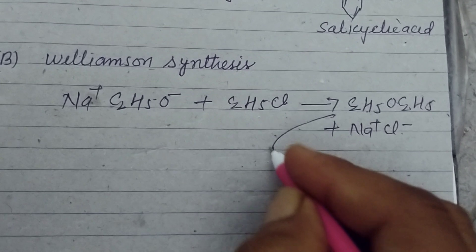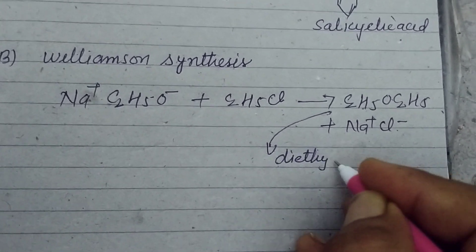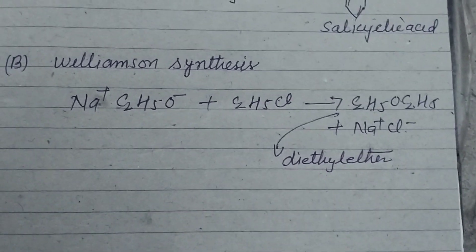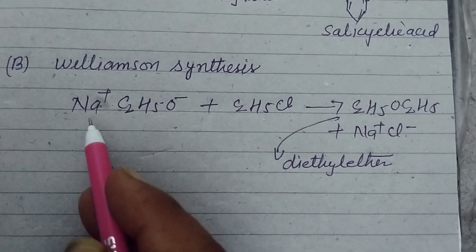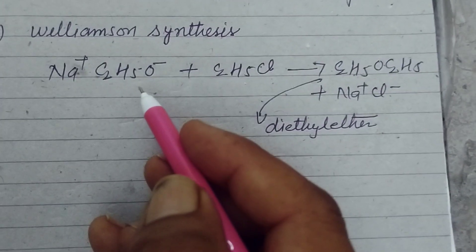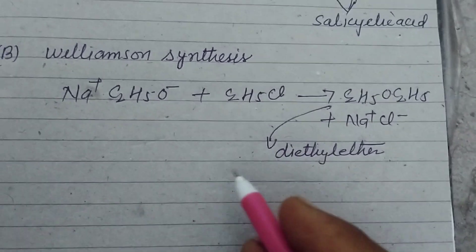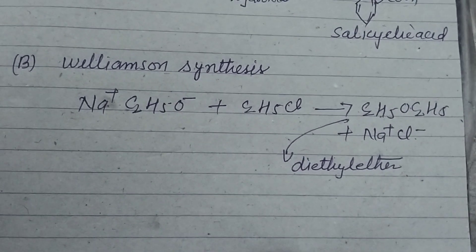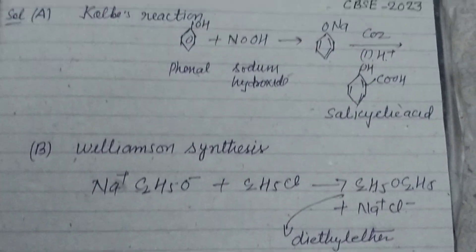And this product is diethyl ether. So diethyl ether is formed when a deprotonated alcohol and an organohalide react with each other. This is known as Williamson synthesis. So this is the reaction of Williamson synthesis.